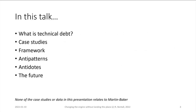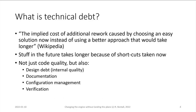In this talk, we're going to discuss technical debt. Pretty much everybody on the call will know what it is, but we'll do a brief definition anyway. I've got three case studies from different points in my career — aha moments for me as I've been learning. That leads into a framework for tackling technical debt, then some anti-patterns — stuff that goes wrong consistently — and some antidotes to help keep you sane. There's also a reflection on the future at the end. None of this relates to Martin Baker; these are all my own experiences from other organizations.